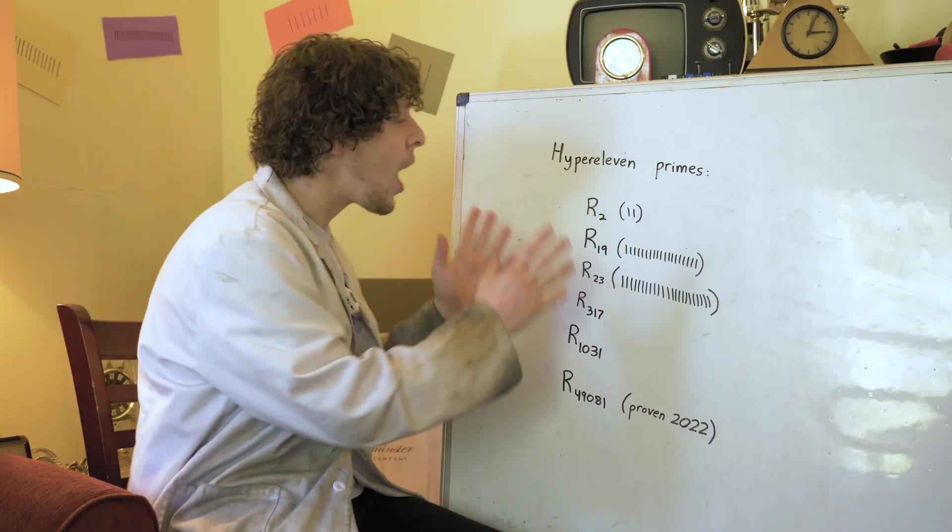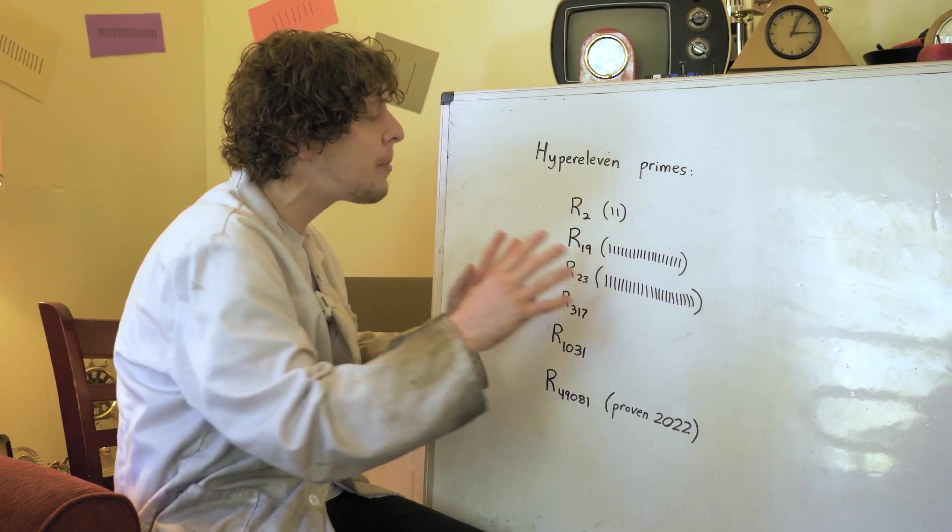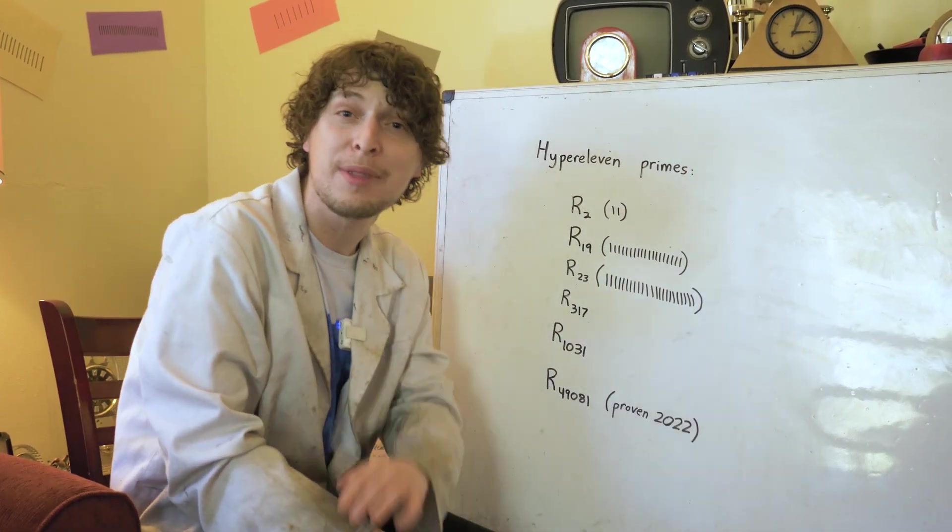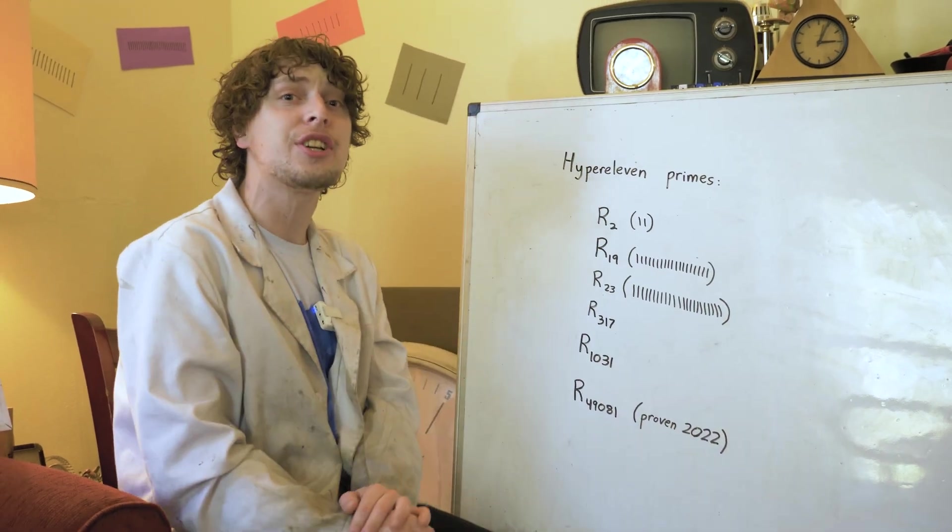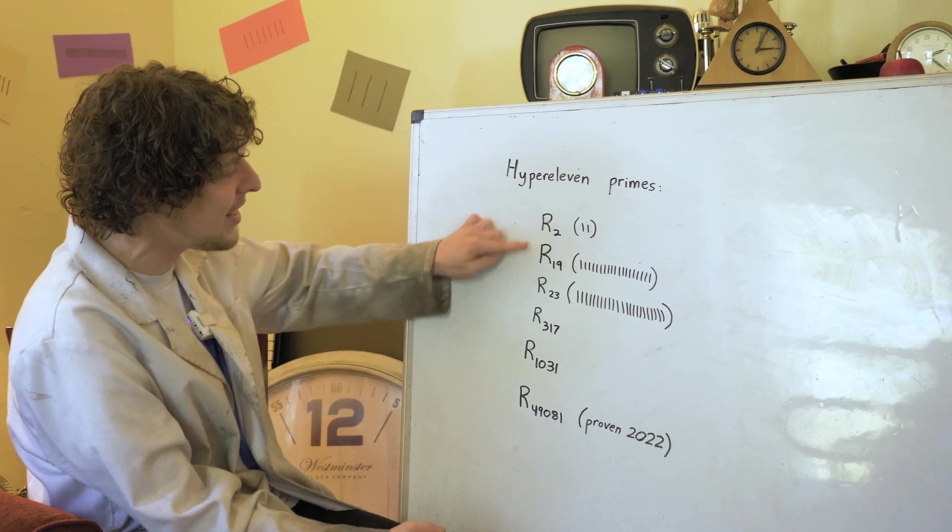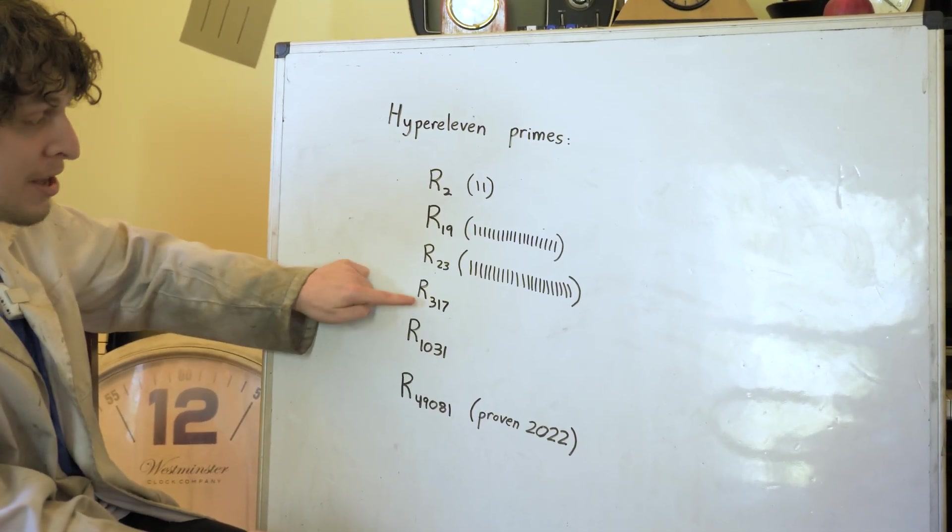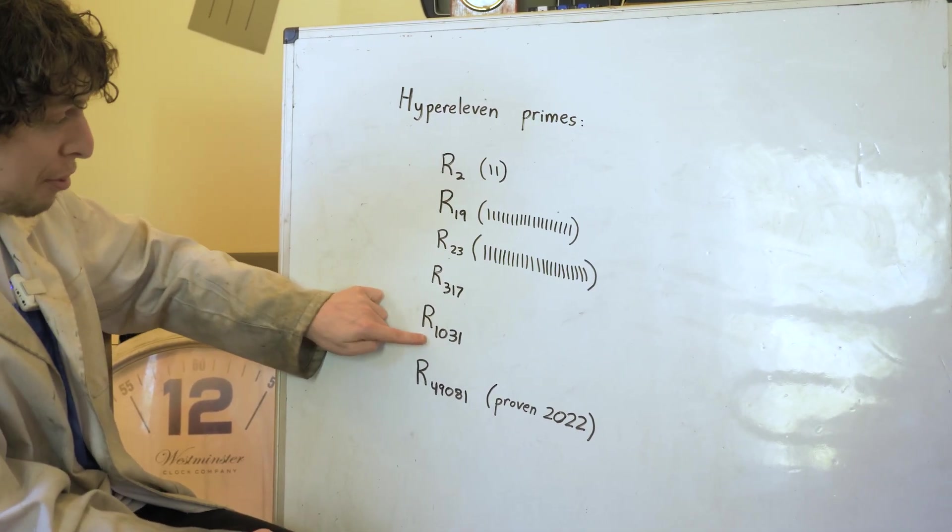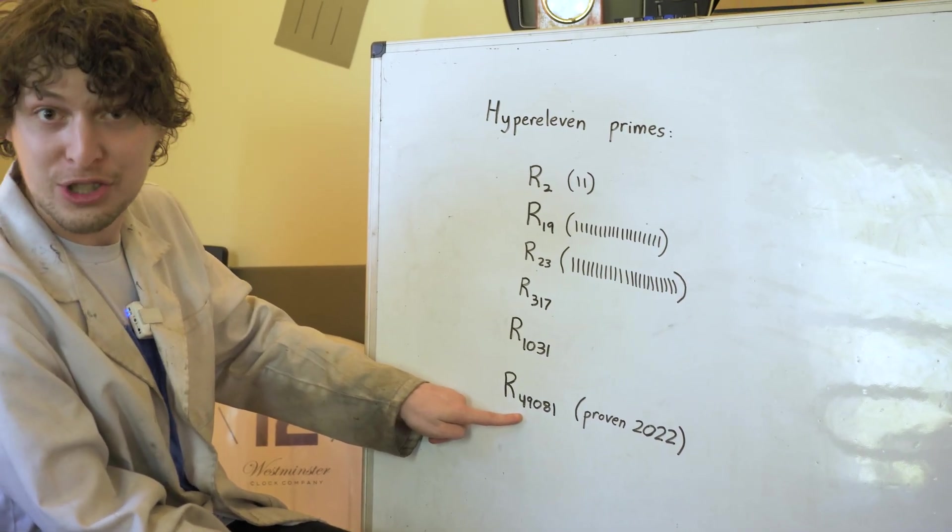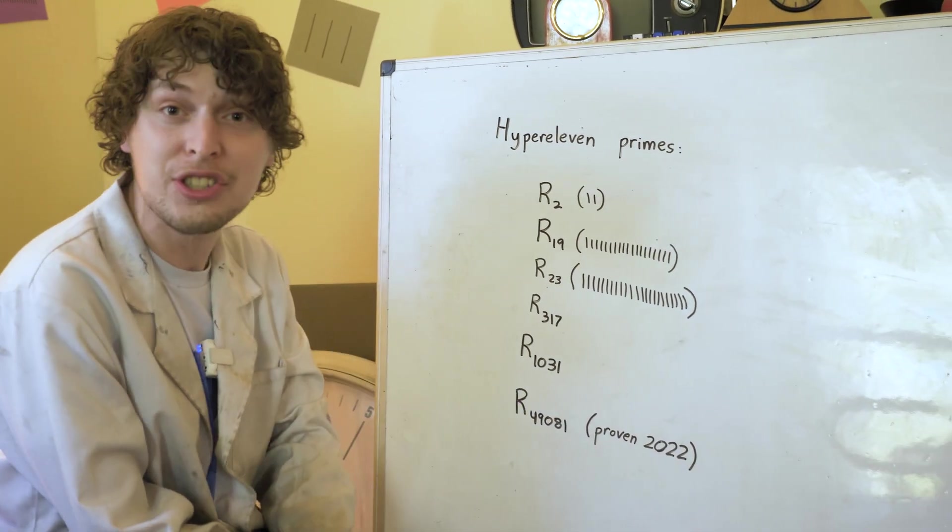After a lot of hunting through hyper 11s with a prime amount of ones in them and seeing which of those actually were primed themselves, mathematicians have so far discovered six. The second, 19th, 23rd, 317th, 1031st, and 49,081st, which was just proven this year.